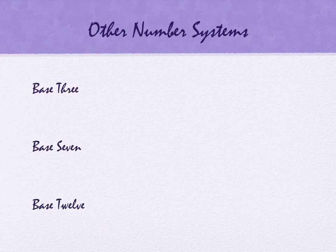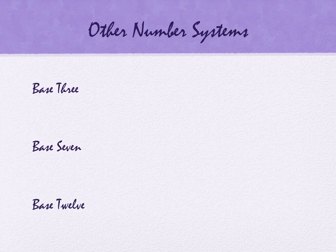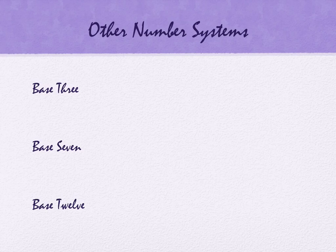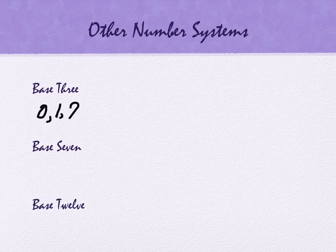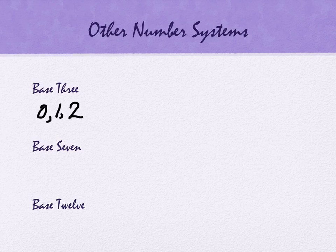We're going to take a look at three different base systems: base 3, base 7, and base 12. In base 3, we have three numerals — just like in base 10 we have 10 numerals from 0 up to 9. In base 10, numerals go from 0 up to 9. So in base 3, numerals are 0, 1, and 2. Notice there are no 3s in base 3 — just like there's no single numeral 10 in base 10, it's a two-digit number. There's no 3 as a digit in base 3.